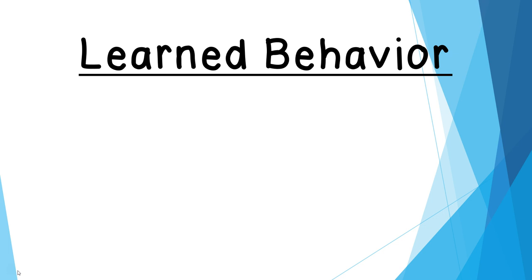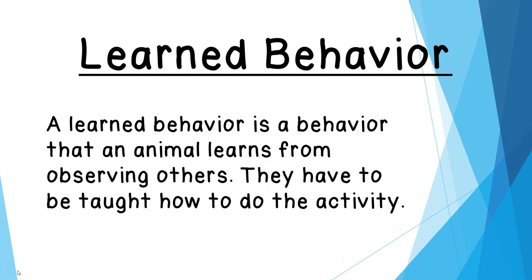The other behavioral adaptation is called a learned behavior, and it's different from an instinct. A learned behavior is a behavior that an animal learns from observing others — they have to be taught how to do the activity. For example, you might have a dog that you sent to obedience school, and now they know how to sit and roll over. They weren't born knowing how to do those things — they had to be taught. Those are learned behaviors.